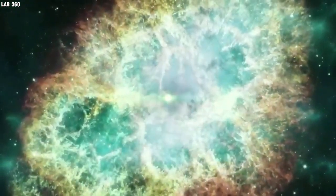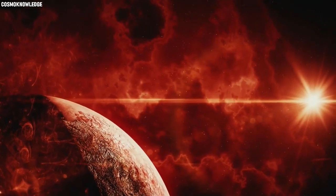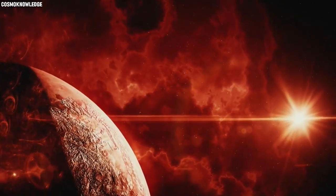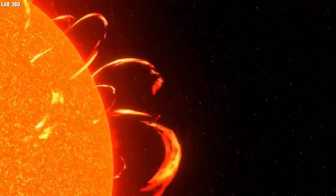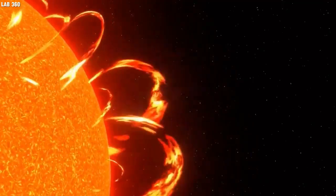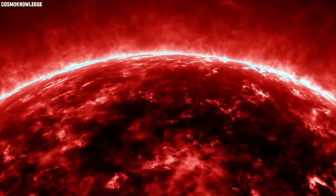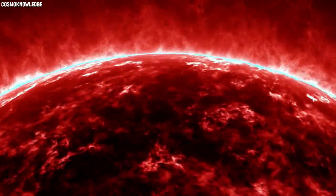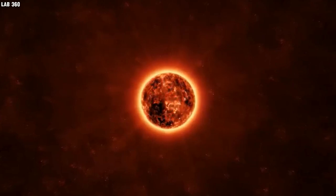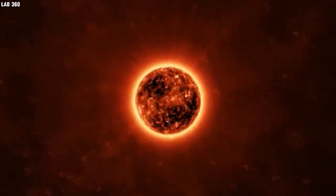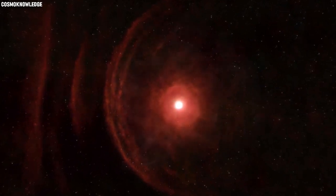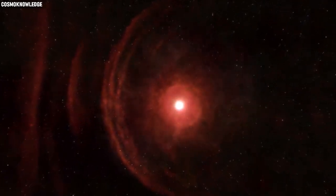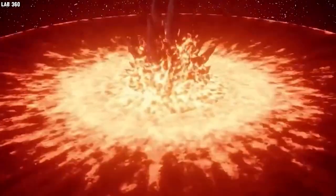The potential repercussions of Betelgeuse going supernova are profound and far-reaching. While the exact effects on our solar system remain uncertain, scientists speculate on various scenarios. One concern is the release of a colossal burst of energy and radiation, which could have implications for any nearby celestial bodies, including Earth. The sudden influx of radiation could disrupt our planet's atmosphere, impact climate patterns, and pose risks to satellites and space missions.